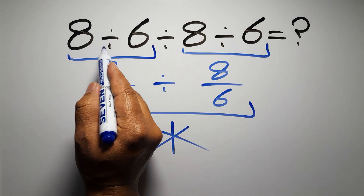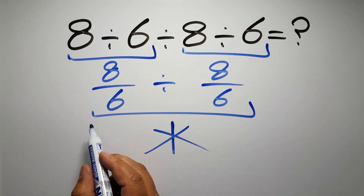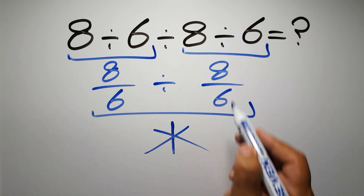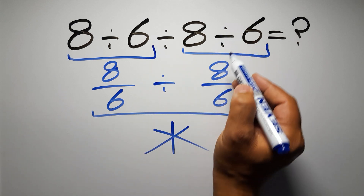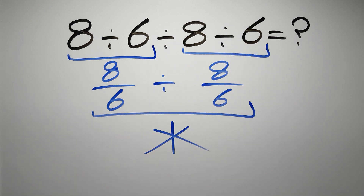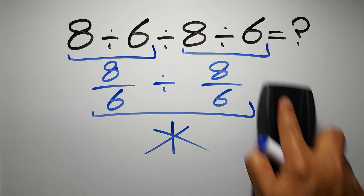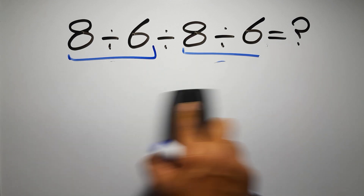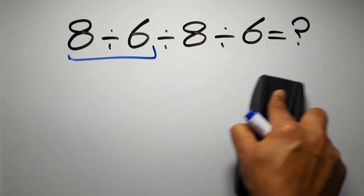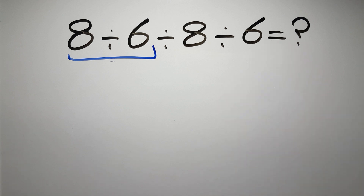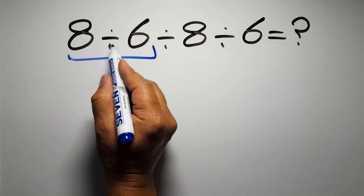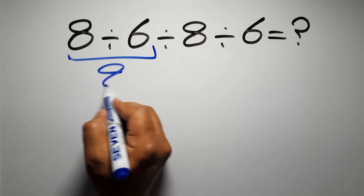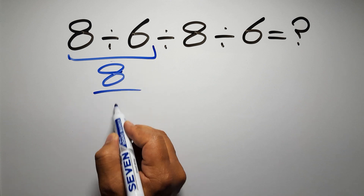So here first we have to do this division, then this division, and finally this division. If we do this division before this division, it is wrong. So first, 8 divided by 6 can be written as 8 over 6.